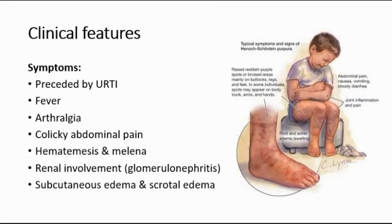The clinical features of HSP include symptoms like fever and arthralgia, which occurs in two thirds of patients. It normally occurs in the knees and ankles and is a non-disruptive form of arthritis. Patients may also have colicky abdominal pain, hematemesis (vomiting of blood), and melena (blood in the stool), which occurs when there is petechiae in the gastrointestinal tract developing.